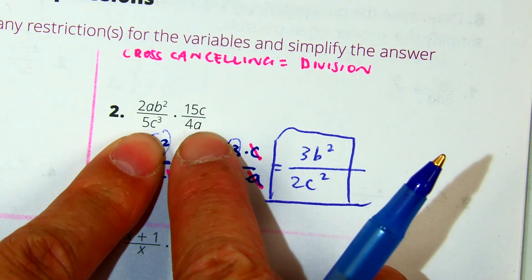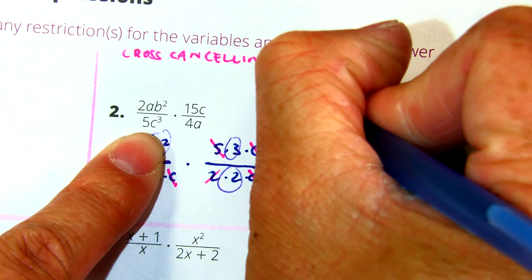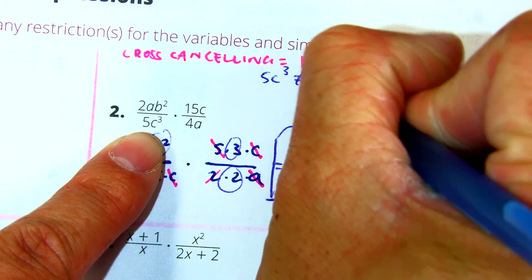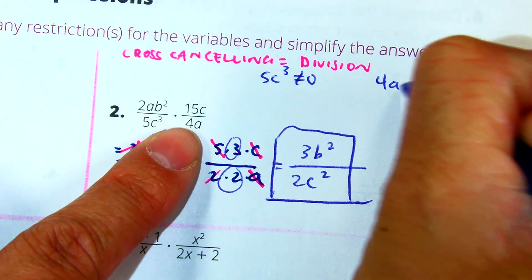Okay? So, I'm going to put 5c to the third power, not equal to 0. And 4a, not equal to 0.